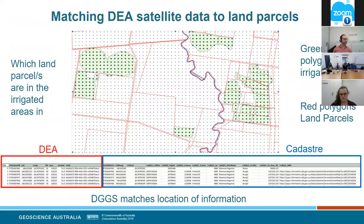Another example uses the same methodology — matching Digital Earth Australia satellite data with land parcels and cadastre information. The question was which land parcels are in which area. It was again a quick exercise. The DEA teams are quite interested in continuing this collaboration, and we're now calculating the whole-of-Australia integration of this data. These examples were done as preliminary tests of the capability itself.